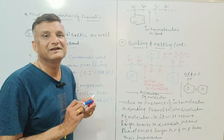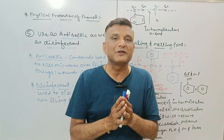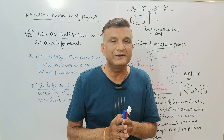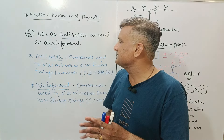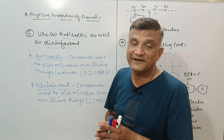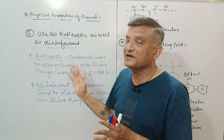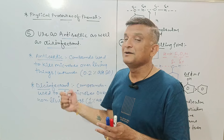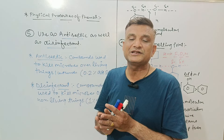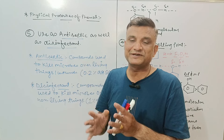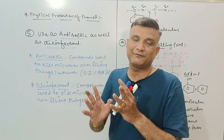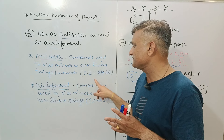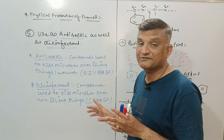So this was about the important physical properties of phenol. We discussed physical state, odor, solubility, boiling and melting point, and use as antiseptic and disinfectant. As an antiseptic — compounds used to kill microbes over the surface of living things — if our body has a wound, we use antiseptics at 0.2% aqueous solution. For non-living things like wash basins or floors, we use disinfectants at 1% aqueous solution of phenol.